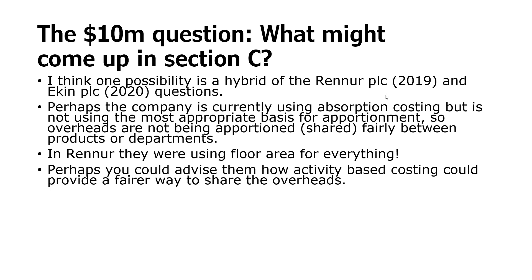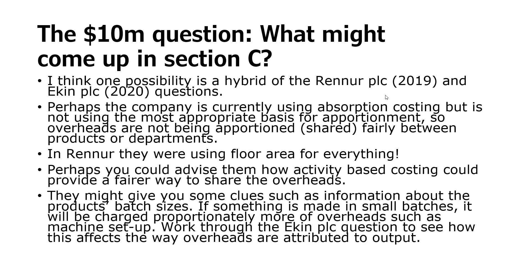It might be that you need to advise them how activity-based costing could provide a fairer way to share the overhead. I'd be looking for things like: is there any information about the batch sizes that these products are produced in? Because batch size does affect how efficient our workforce is. If there are machine setups or quality control inspections required with every batch, then making things in a larger batch will spread that overhead cost over more units, making it cheaper per unit. Have a look at my Ekin PLC video and one or two others for detail on how activity-based costing works.